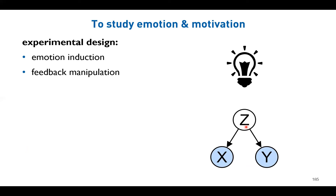Another technique is feedback manipulation. For example, if you think you are very good at mathematics and you perform well, but I always give you negative feedback regardless — how would you feel? This is a manipulated feedback to induce emotion or motivation. In some ongoing stress-related studies, no matter how well you do, you always receive neutral or even negative feedback, which reliably induces stress — and this can be measured by cortisol levels.